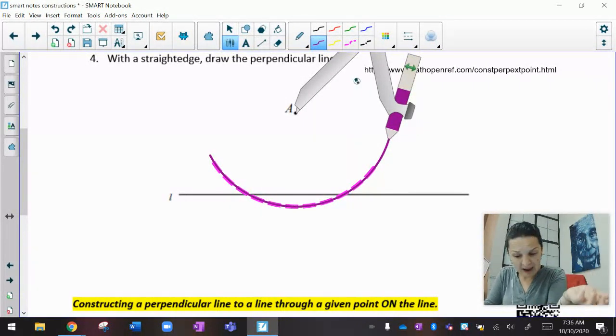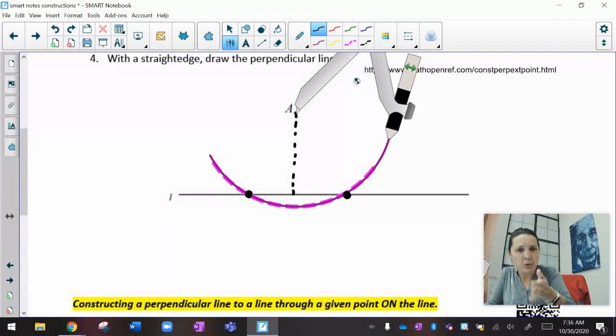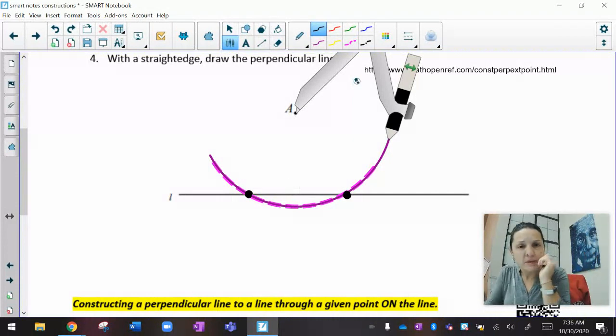What I've done now is I've created these two points such that A is directly in between them. If I dropped A down perpendicularly, I'd hit the midpoint. So what I've done is I've created a segment that A is in the middle of.